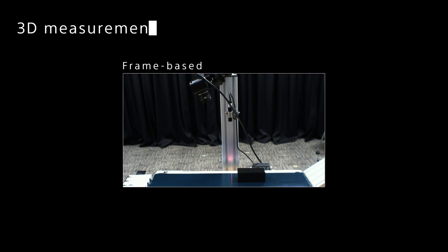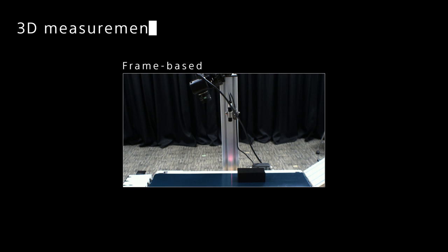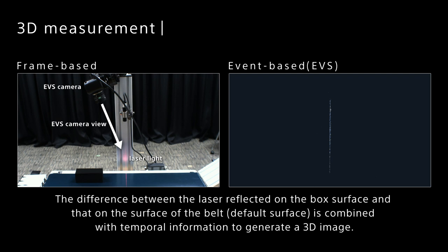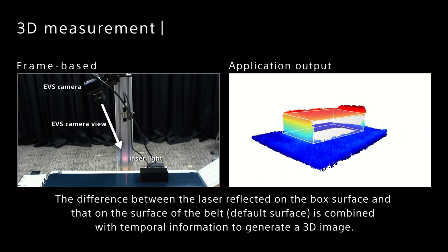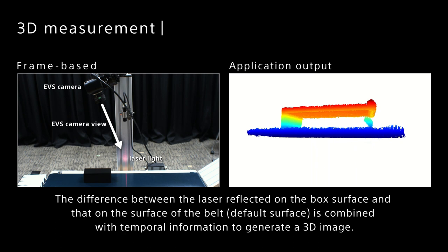3D measurement. By detecting the reflected light from the laser, the object is 3D measured. The difference between the laser reflected on the box surface and that on the surface of the conveyor belt is combined with temporal information to generate a 3D image. Only the point where the reflected light returns to EVS acquires the height information and outputs it as a point cloud. The high temporal resolution enables us to obtain detailed height information with enhanced accuracy.